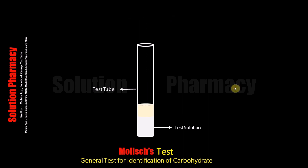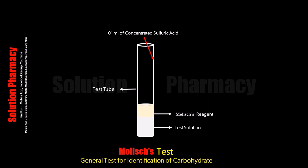After adding Molisch reagent, shake the content of the test tube and then add 1 ml of concentrated sulfuric acid drop by drop, passing through the wall of the test tube, as you can see in the video.